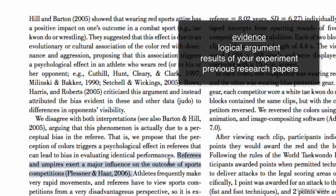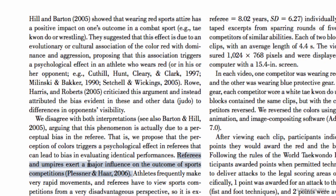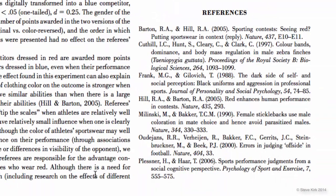Everything needs to be backed up with evidence. It might seem reasonable that referees and umpires exert a major influence on the outcome of sports competitions, but without the reference, that's just your opinion. Your scientific paper needs to be 100% justified so that other people will believe what you write. If we want to know what a cited paper is, we go to the list of references at the end of the paper, and there you have the names of the authors, the year, the name of the paper, the name of the journal, the volume number, and the pages. Your research paper will also have to have a reference list at the end like this.